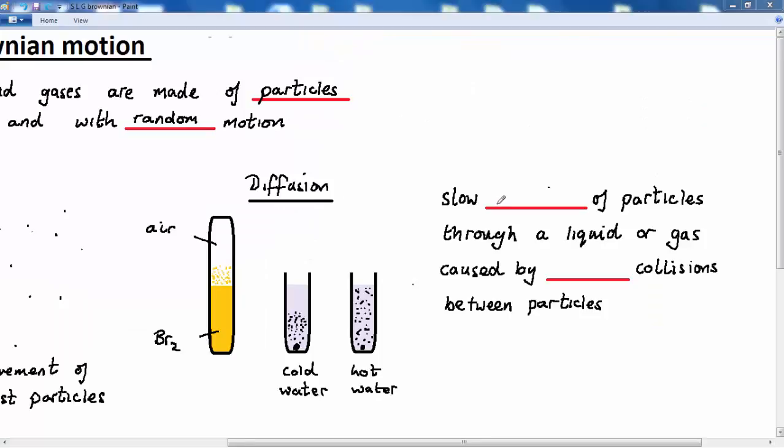So we can say that diffusion is the slow spreading of particles through a liquid or a gas caused by random collisions between those particles.